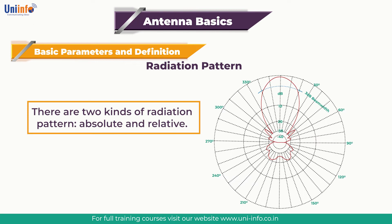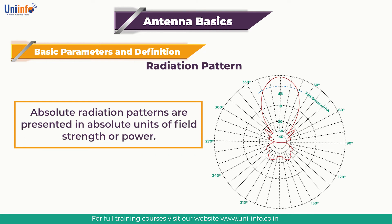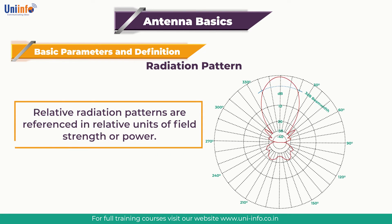There are two kinds of radiation patterns: absolute and relative. Absolute radiation patterns are presented in absolute units of field strength or power. Relative radiation patterns are expressed in relative units of field strength or power. Most radiation pattern measurements are relative to the isotropic antenna, and then the gain transfer method is used to establish the absolute gain of the antenna.